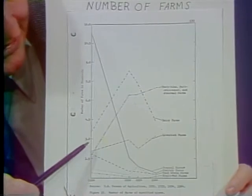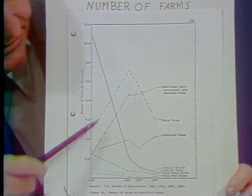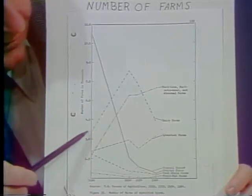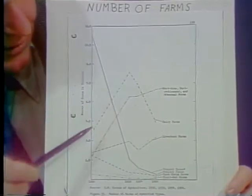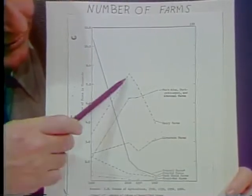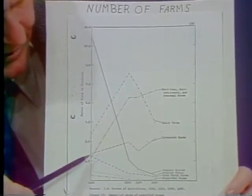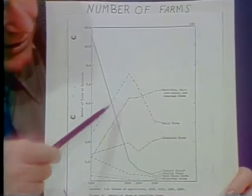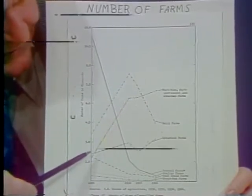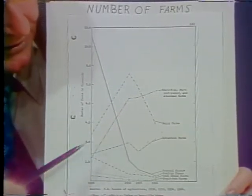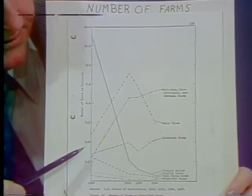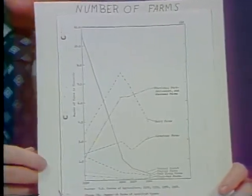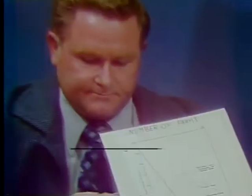As the general farm went out of the picture, specialized farms came in. Dairy farms were increasing very rapidly during that same period, as was part-time farming and livestock farming. The general farm really was not a competitive type of farm.